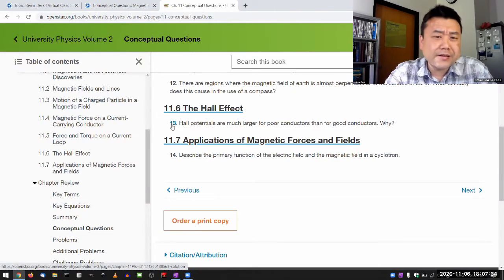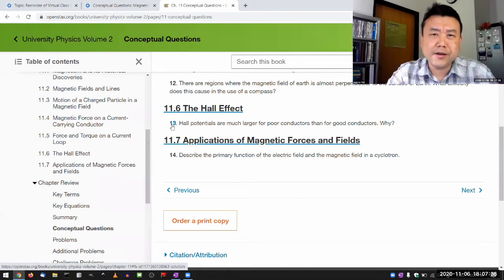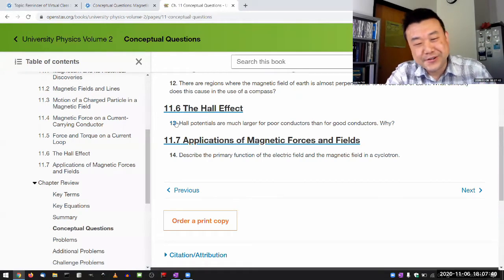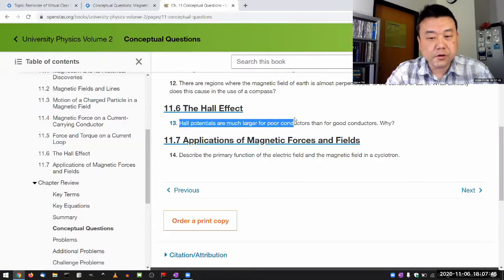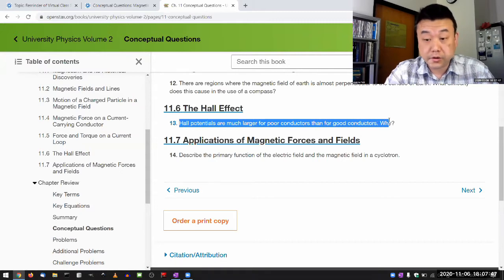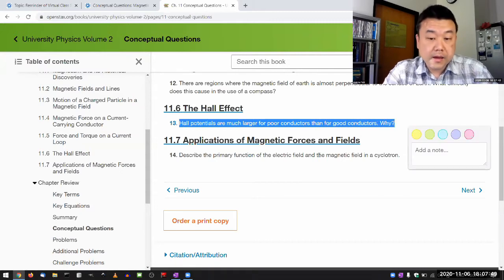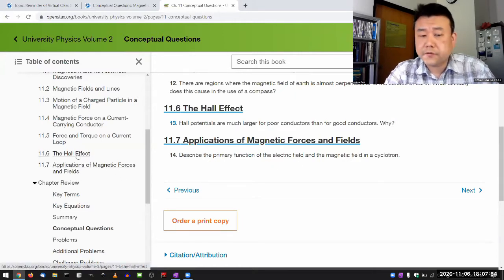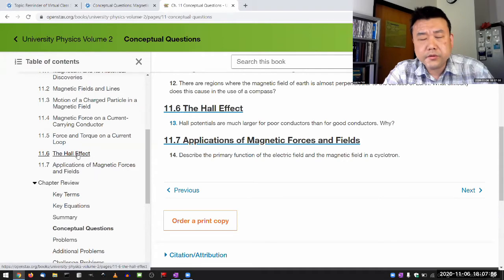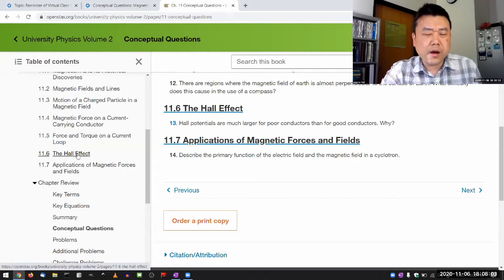This particular question, this is the form that the question the textbook asks. And I guess technically there is an answer key that you can look at. But you should answer in your own words. So it asks the Hall potentials are much larger for poor conductors than for good conductors. Why? And you can kind of look through the sections to search for the answer. And what I want to get to in this virtual class session is something that the textbook doesn't quite deeply go into.